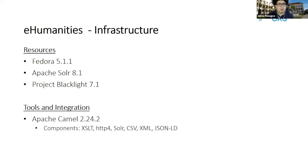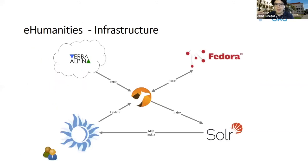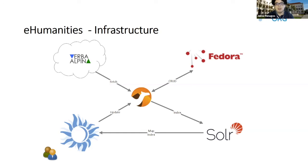These systems are going to be integrated with the use of Apache Kafka, and some of the components that we use are listed there. In our pilot project — in this case Verbalpina, as the project is called — the information is going to be fetched from Apache Kafka. This information is going to be processed, and then after some processing we are going to ingest it in Fedora.